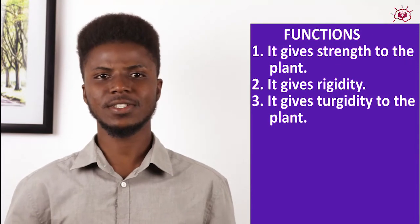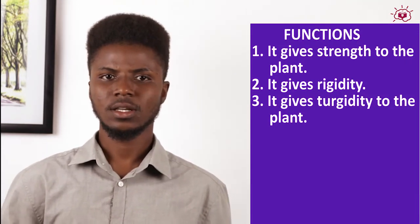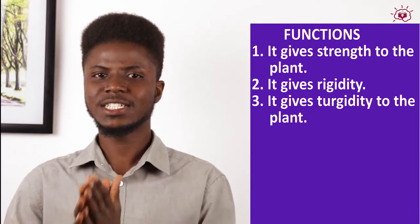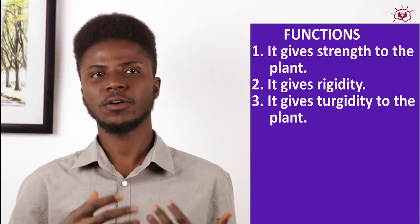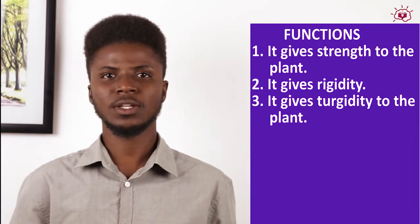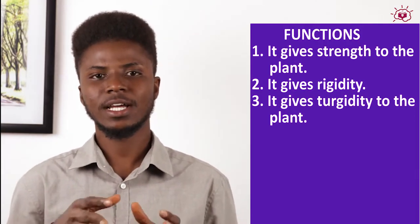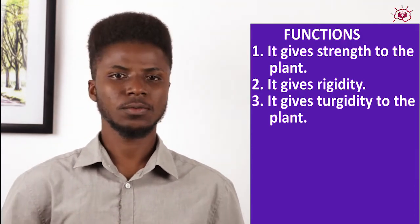The cells of colenchyma are flexible and they allow the bending and twisting of the stem. One of the functions of colenchyma is that it gives strength to the plants. The parenchyma gives rigidity to the plants and is functional in turgidity — once water enters the parenchyma, it gives the plant that turgid outlook.